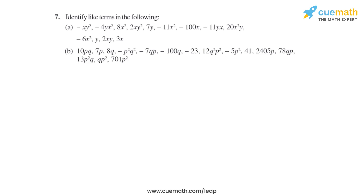Question 7 of this exercise says: identify like terms in the following. So basically we will have to identify which are the like terms. Let's find out all the like terms of part A first, then we will move on to part B.